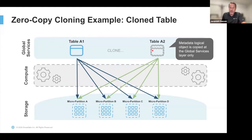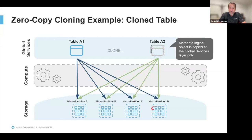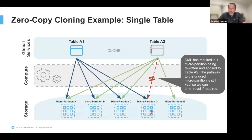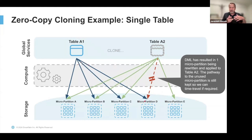Imagine A1 is a production table and A2 is a development or pre-production table. You create that copy that initially takes up no additional storage. What customers sometimes worry about is: if I make a change to the development table, will it affect the original? It will not. If you make a change — say you update a record or obfuscate some data — a new file is created with that changed data, and the development table's metadata points to the new file, no longer to the original. The production table still points to the original file unchanged.